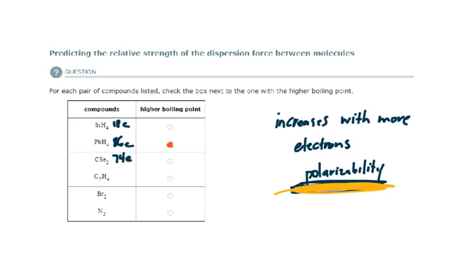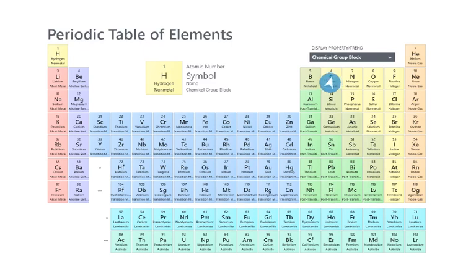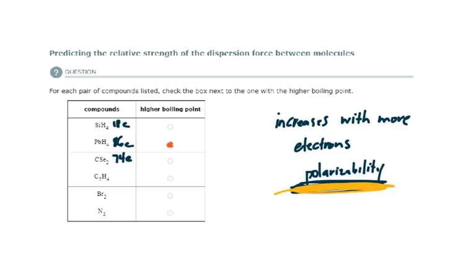And then if I go to C2H4, that is 12 from the carbon, C2H4. That's 4. That's 16. So this one will have the higher boiling point.